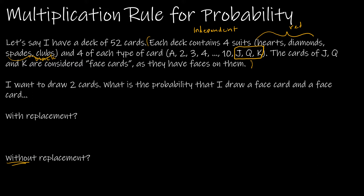The question is: I want to draw two cards and find the probability that I draw a face card and then another face card. Notice I have two versions of the question — with replacement and without replacement. With replacement means I'll have 52 cards in the deck the first time I draw, and after looking at the card, I put it back. So I have 52 cards the second time as well.